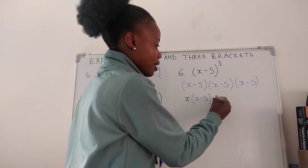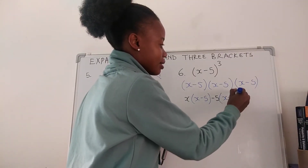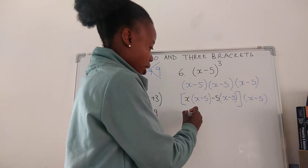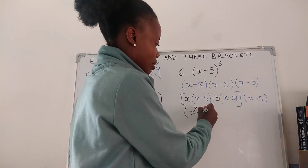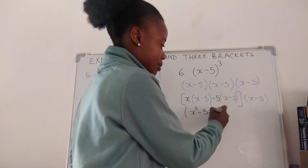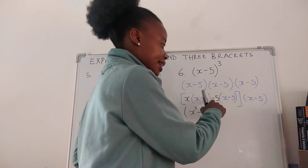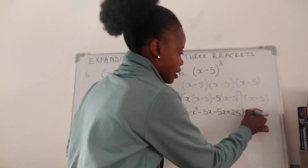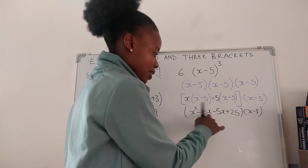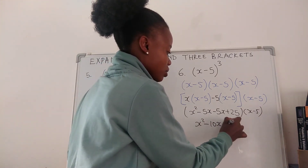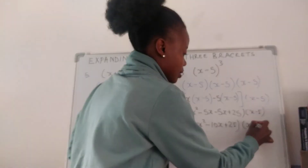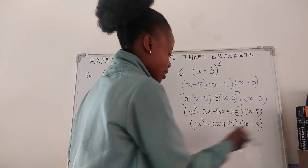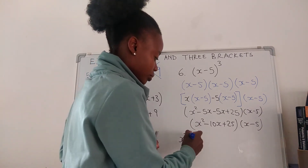We remove brackets: x squared minus 5x, then negative 5 times x is minus 5x, negative 5 times negative 5 — a negative and a negative gives you a positive — so positive 25. We collect like terms: negative 5x minus 5x is negative 10x, plus 25. So the result of the first two brackets is x squared minus 10x plus 25, and we still have (x − 5). Now we multiply x squared with everything on this side, negative 10x with everything inside, and 25 with everything on this side.